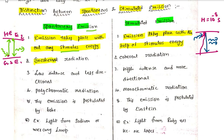In spontaneous emission, the radiation produced is incoherent — it does not have the same phase. In stimulated emission, the emitted radiation is coherent, meaning it has the same phase. Stimulated emission produces high-intensity output.